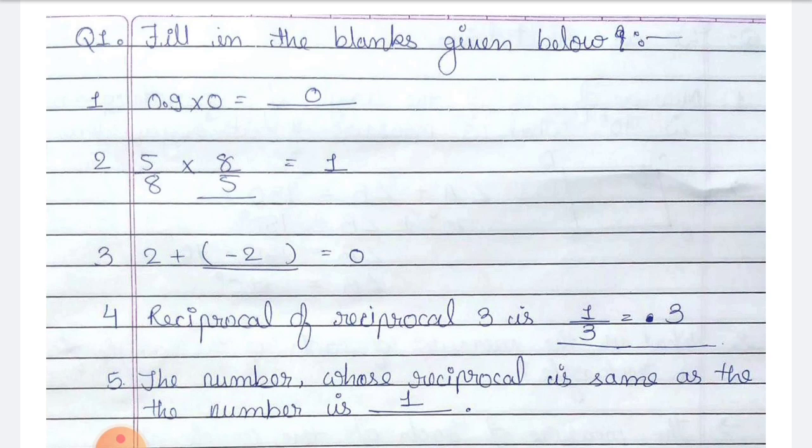Number 4: reciprocal of reciprocal of 3 is blank. The reciprocal of 3 is equal to 1 by 3, and the reciprocal of 1 by 3 will be 3, so the answer will be 3. Number 5: the number whose reciprocal is the same as the number itself — the answer is 1.